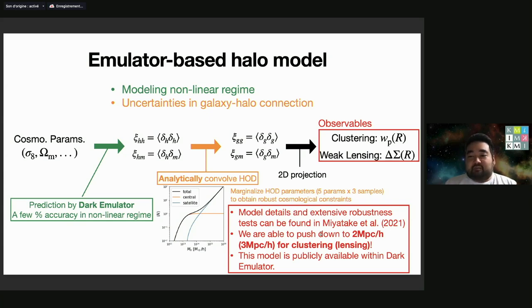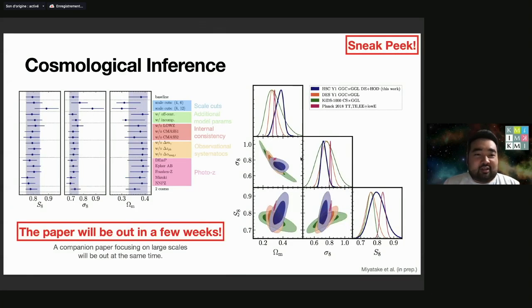The model details and extensive robustness tests can be found in this paper. We are able to actually push down to 2 megaparsec and 3 megaparsec for lensing and clustering.